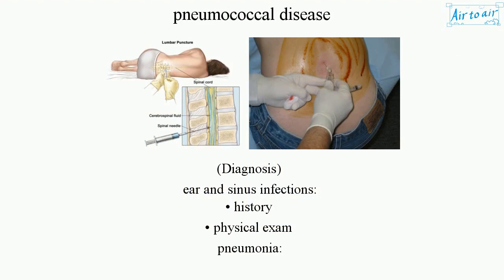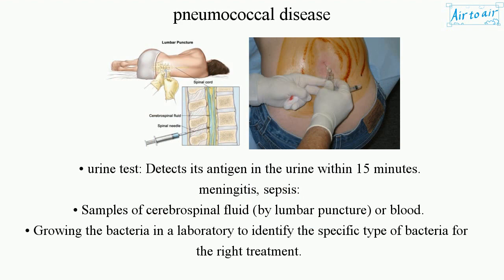Diagnosis: For ear and sinus infections — history and physical exam. For pneumonia — a urine test that detects its antigen in the urine within 15 minutes. For meningitis and sepsis — samples of cerebrospinal fluid by lumbar puncture, or blood, by growing the bacteria in a laboratory to identify the specific type of bacteria for the right treatment.